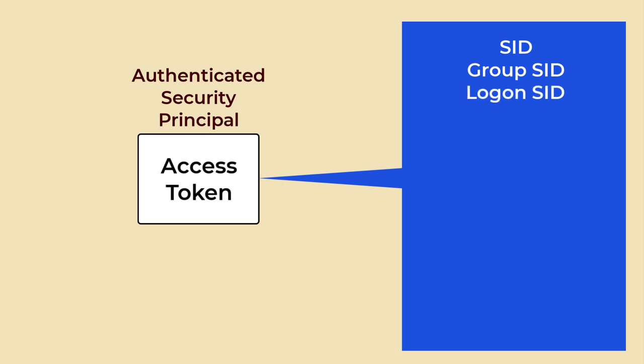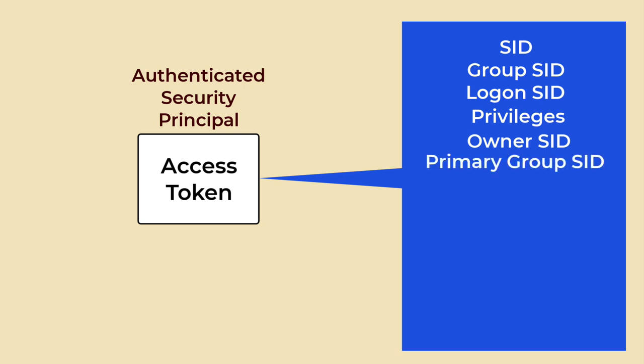Group SIDs help determine the user's permissions based on group memberships. The Logon SID identifies the current logon session; it is unique for each logon session and helps track user activity during that session. Privileges are specific rights assigned to the user or the user's groups and determine what actions the user can perform, such as shutting down the system or changing the system time. The Owner SID identifies the token's owner and is used to determine the ownership of objects created by the user. The Primary Group SID identifies the user's primary group and is used in access control decisions, included in the security descriptor of objects created by the user.